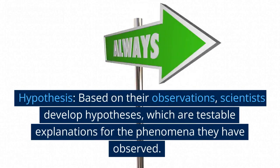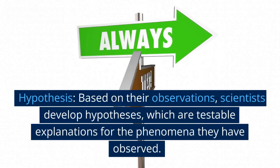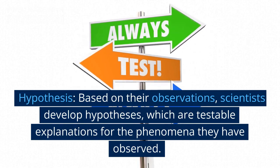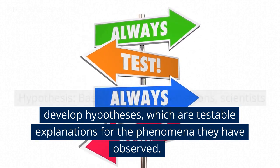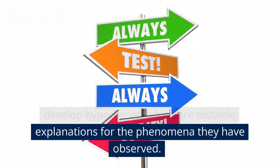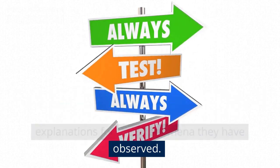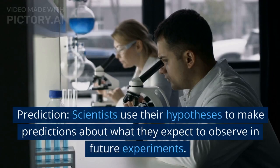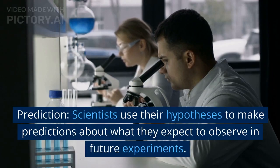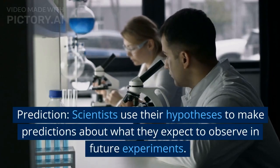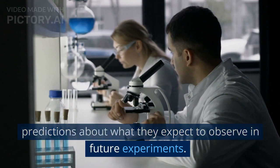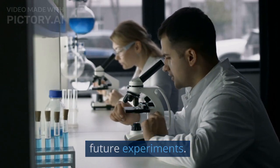Hypothesis: based on their observations, scientists develop hypotheses, which are testable explanations for the phenomena they have observed. Prediction: scientists use their hypotheses to make predictions about what they expect to observe in future experiments.